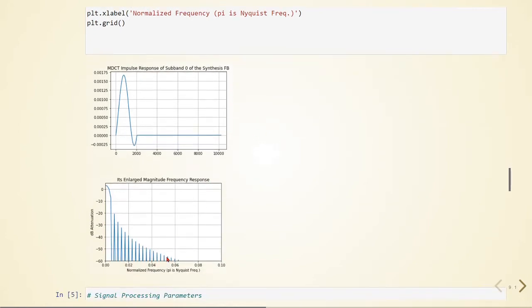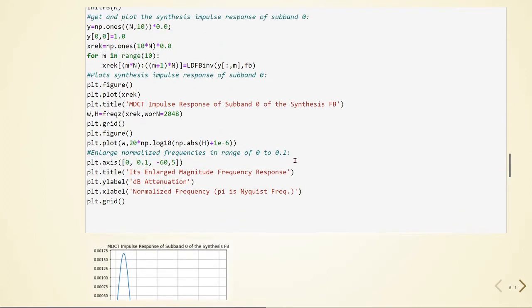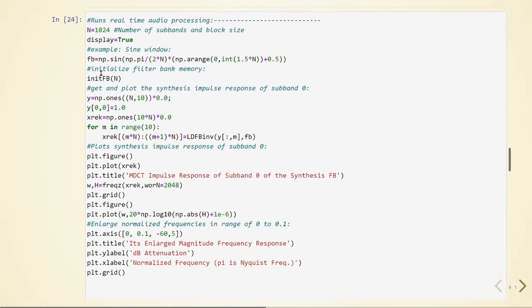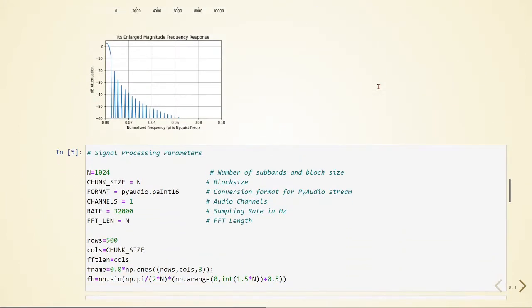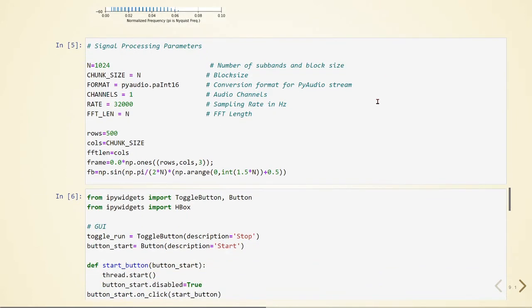And its frequency response that we calculated using the freqz from scipy signal. This is just testing, checking if our reconstruction is working. Now we go to the real-time implementation. We have these signal processing parameters. If you are familiar with the other examples that we already did in advanced digital signal processing, multi-rate signal processing, and also in the beginning here on audio coding, we use PyAudio.